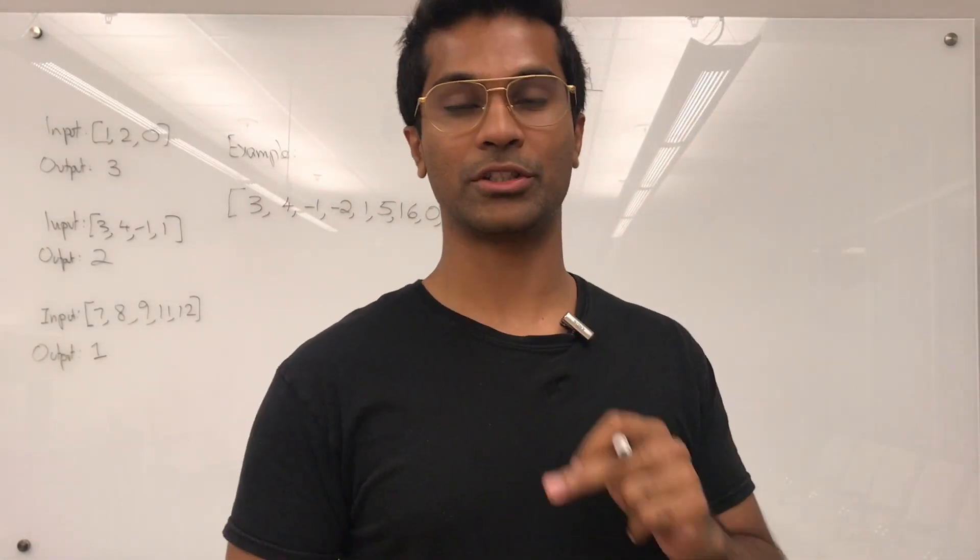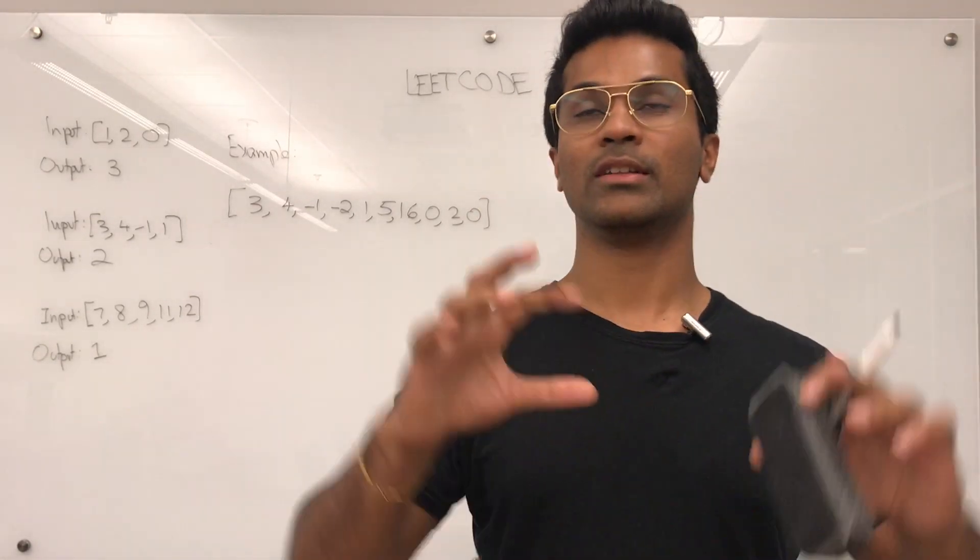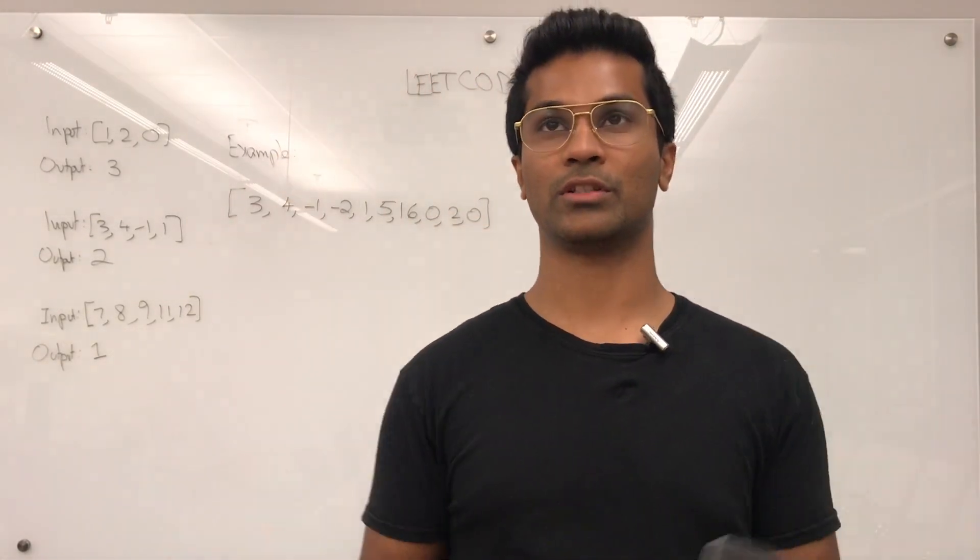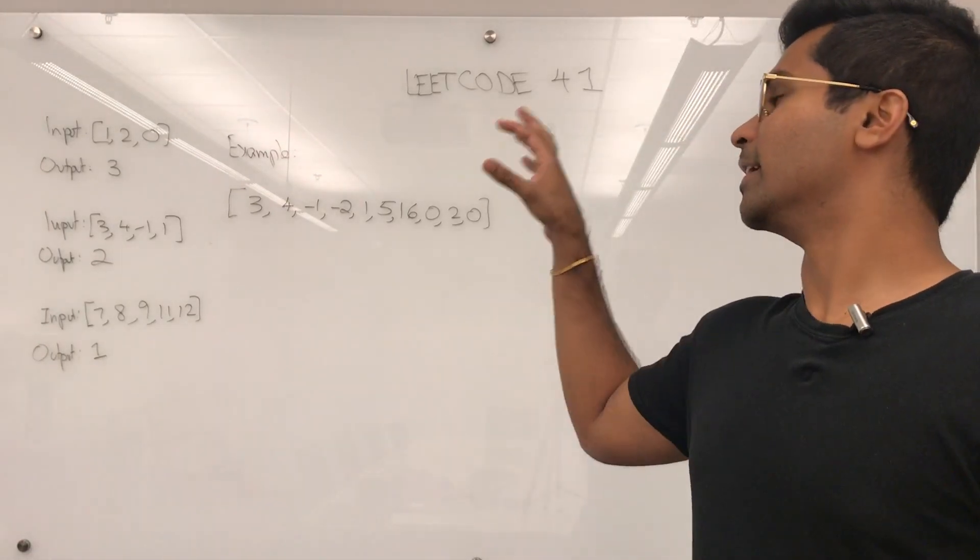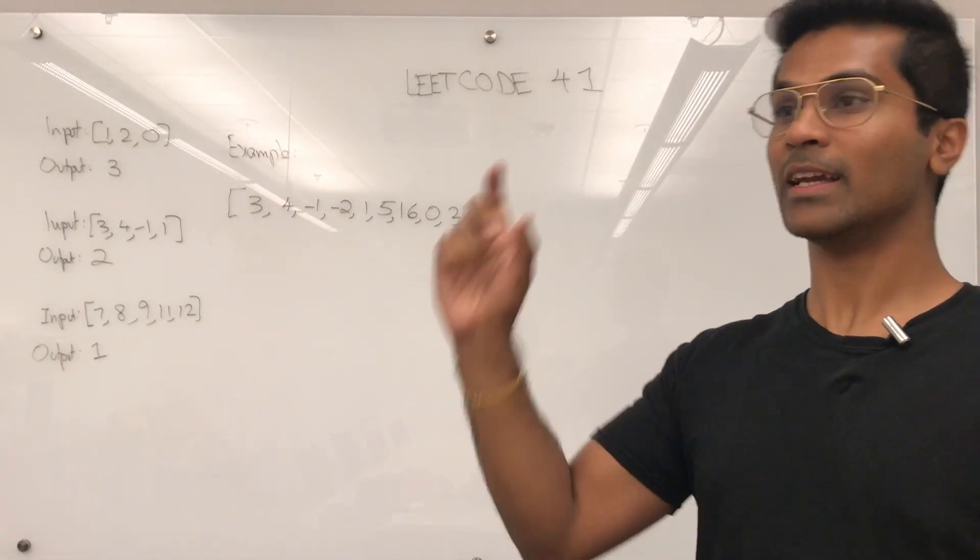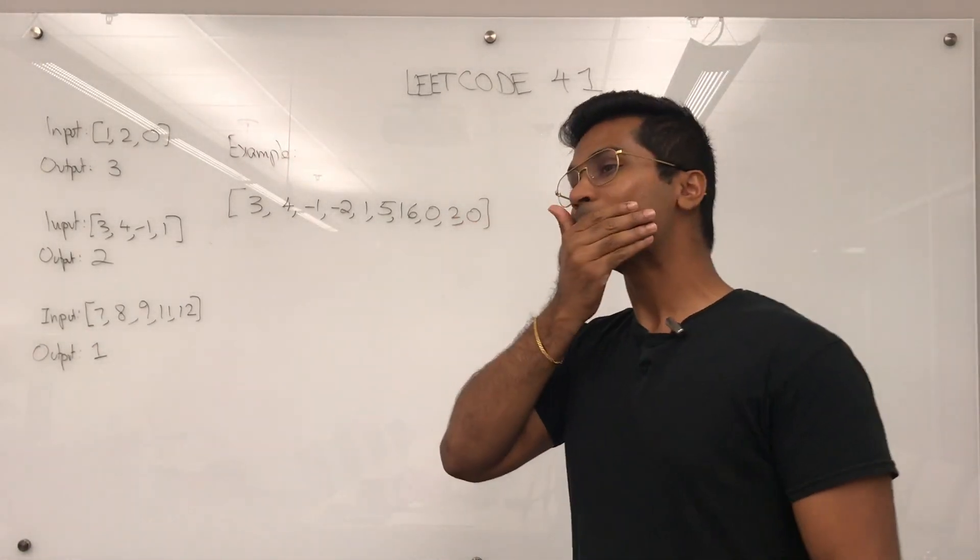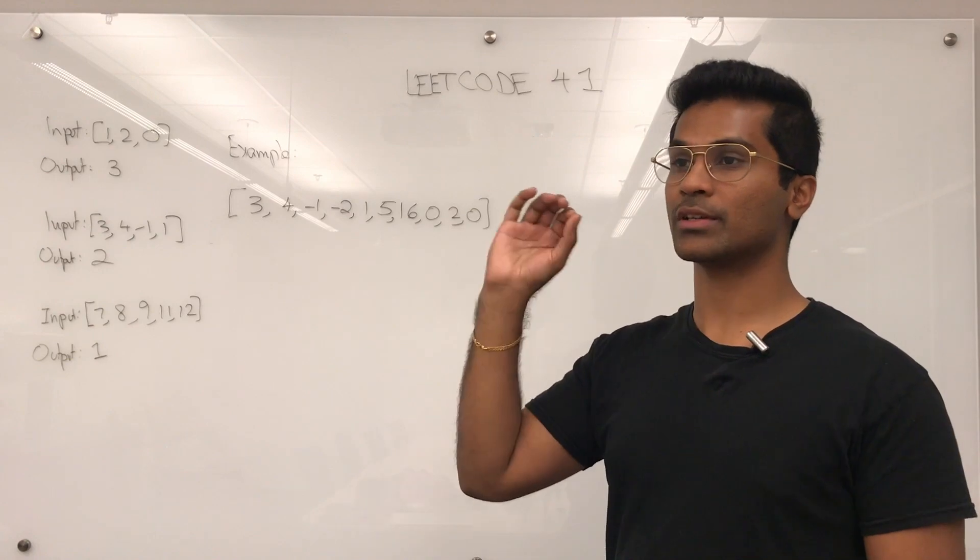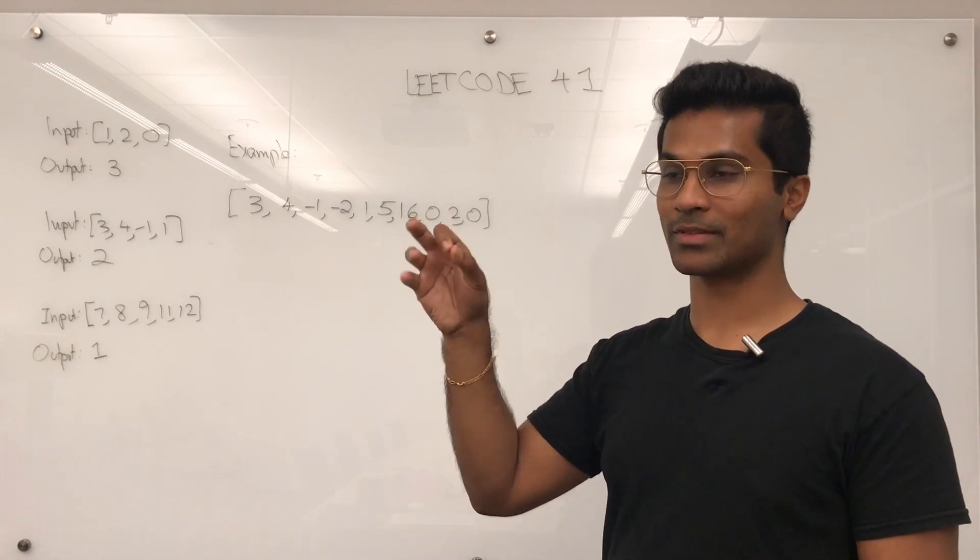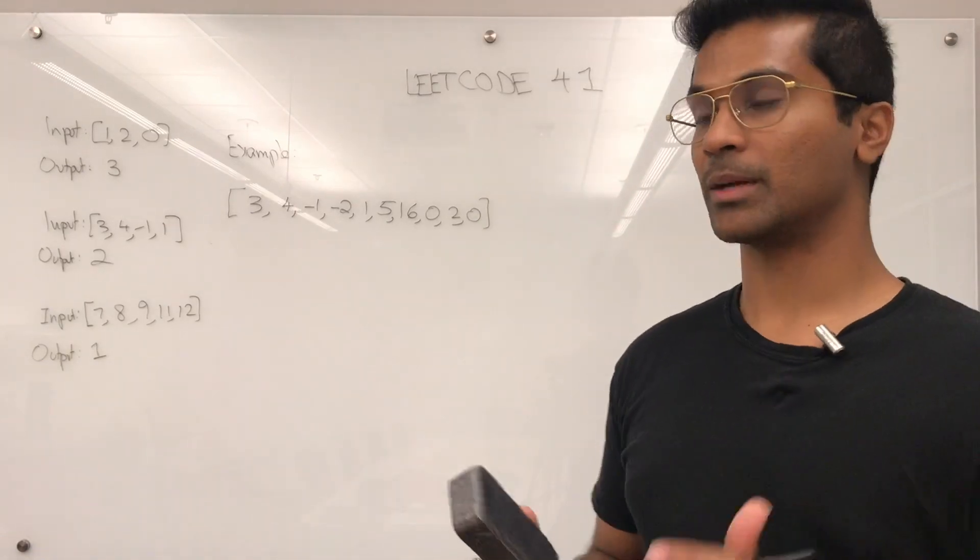The solution for this one comes from the LeetCode solution tab itself. Before I get into the code, I'm going to tell you the trick of understanding and remembering this problem. The answer that they want us to return is actually the index of the array which has the first non-negative number after we are done processing it.